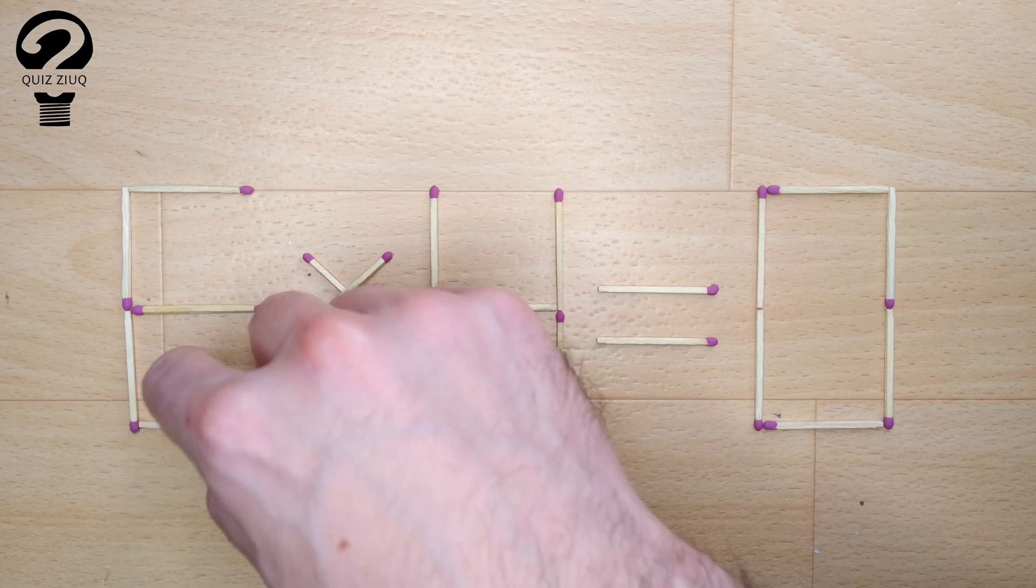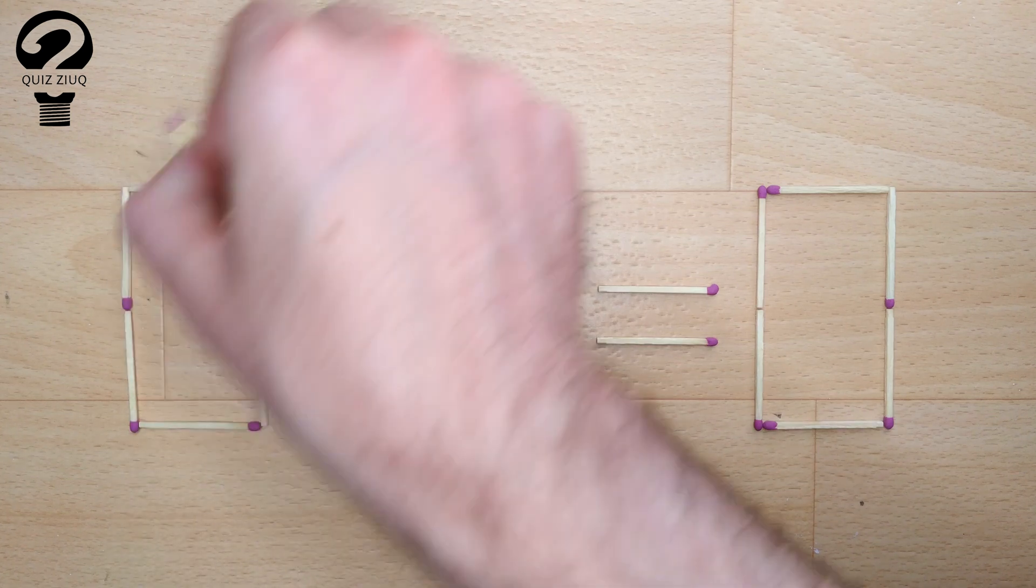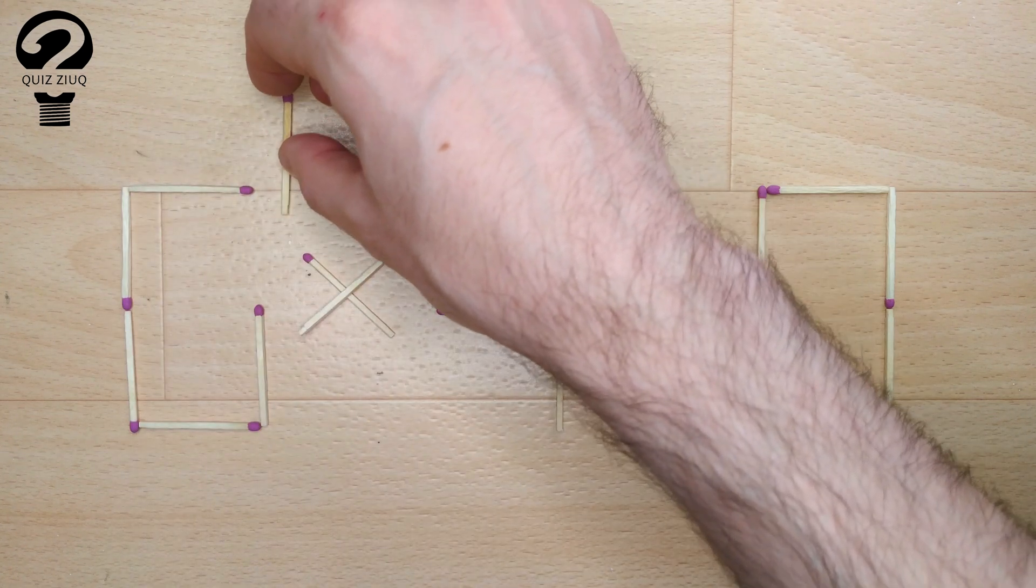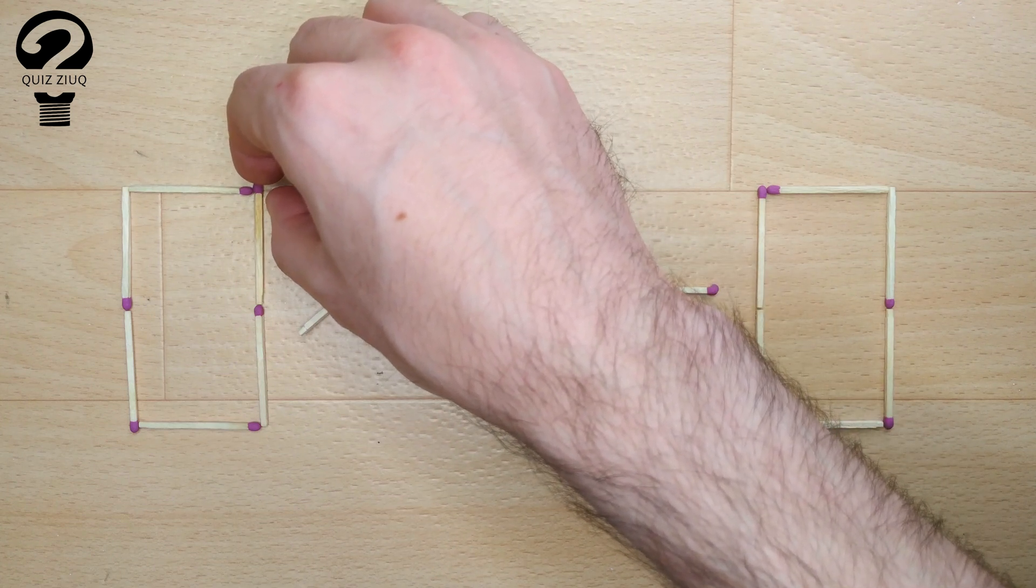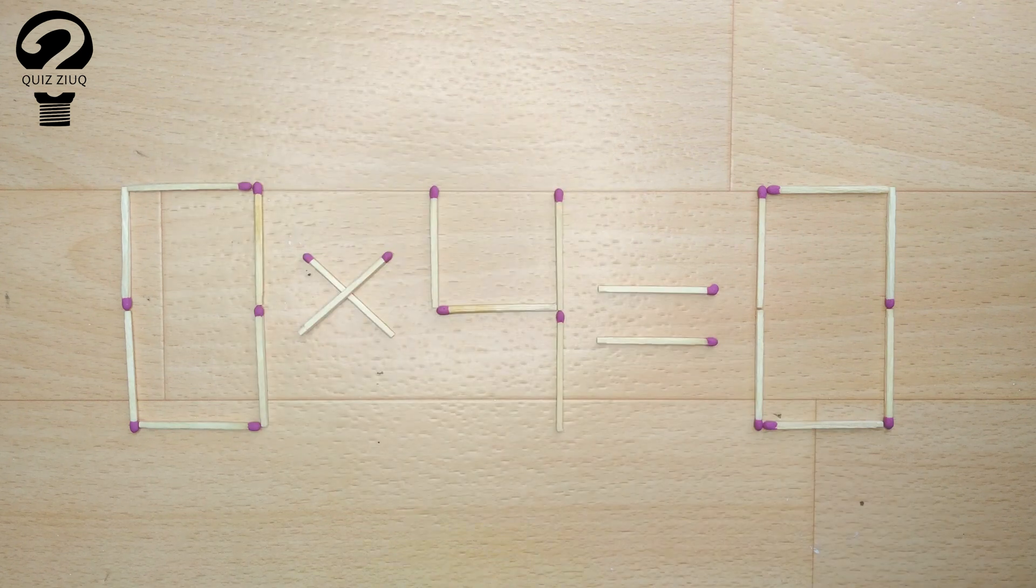And now, when we check the condition 0 times 4 equals 0. 0 equals 0. Our equation is correct. The task is completed. The puzzle is solved.